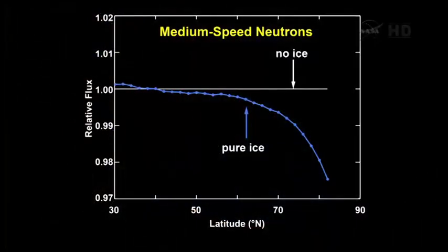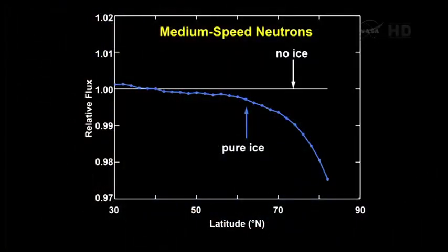Well, in contrast, the lots of ice hypothesis filling up these regions with pure ice would be shown in the blue line. And again, as you approach these radar bright regions, if they contain enhanced hydrogen, you would see decreases in the number of neutrons.